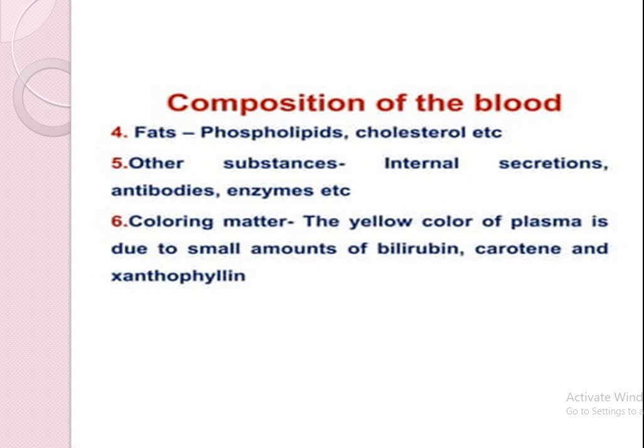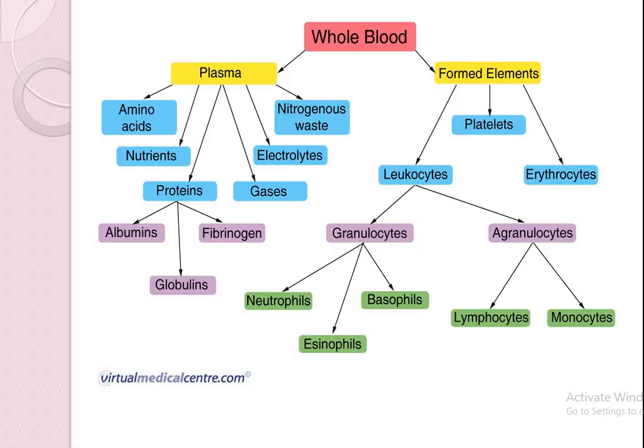The color of the plasma is yellow. This is due to the small amount of bilirubin, carotene, and xanthophyll present in it.